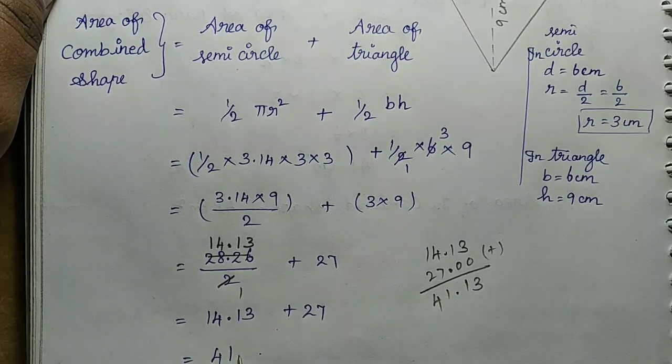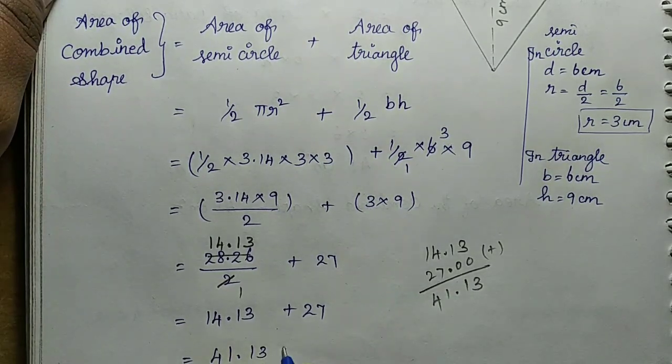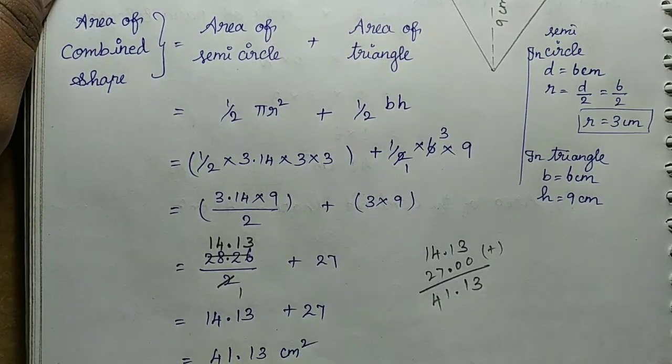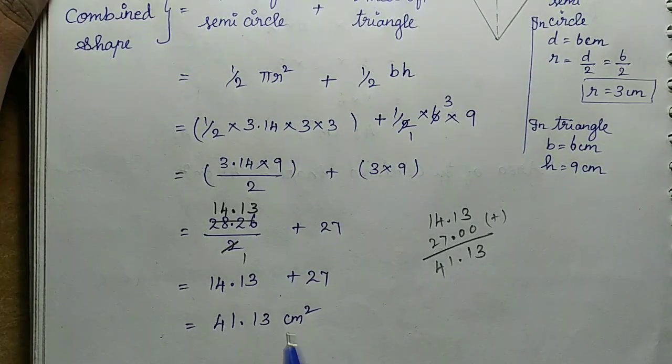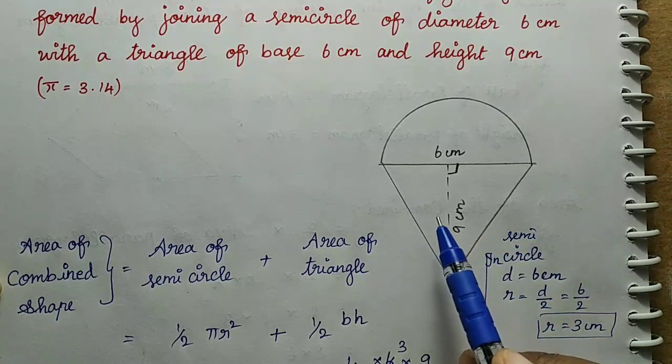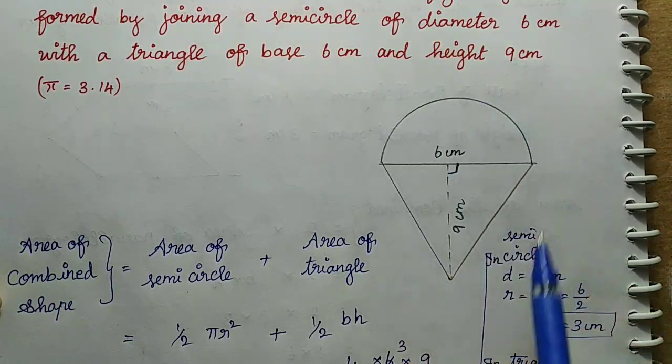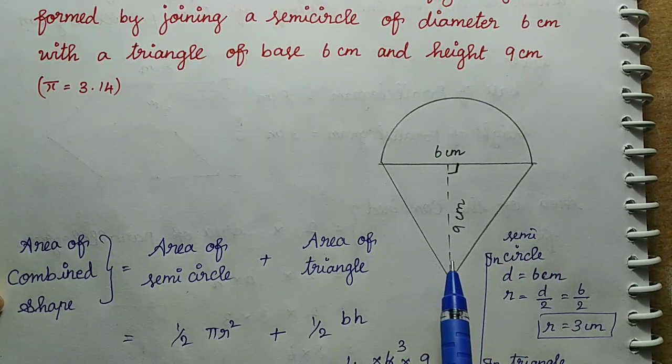So the answer is 41.13 cm². This is the overall area of the diagram when the semicircle and triangle are combined.